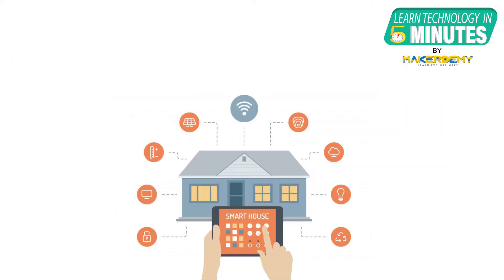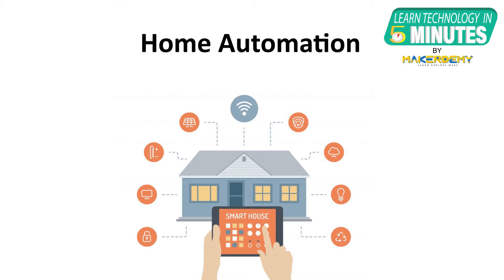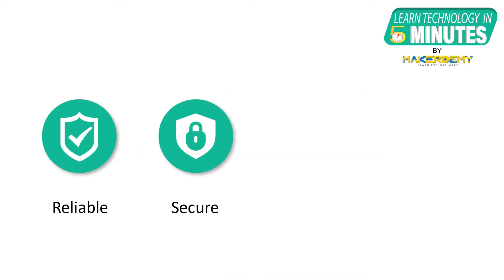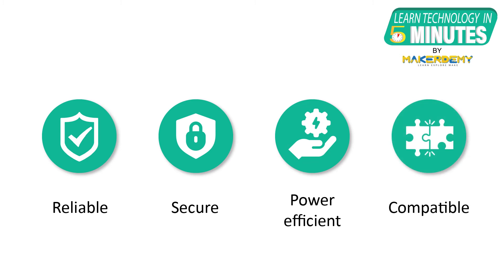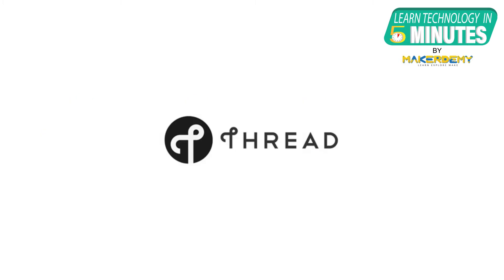One such field of IoT that has become very popular is home and building automation. With the increasing demand for home automation, there was a need for a standard networking protocol and technology stack that was reliable, secure, power-efficient and compatible with other existing networking protocols. To meet such requirements, the Thread protocol was introduced.